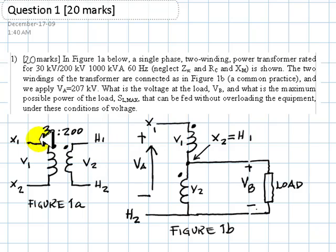1000 kVA at 60 Hz, neglect the short circuit impedance, the core equivalent resistance, and XM. The two windings of the transformer are connected like this. In short, they are connected in series.